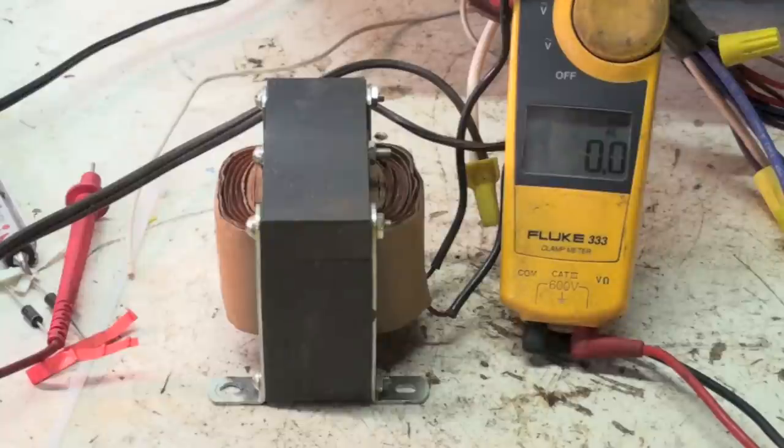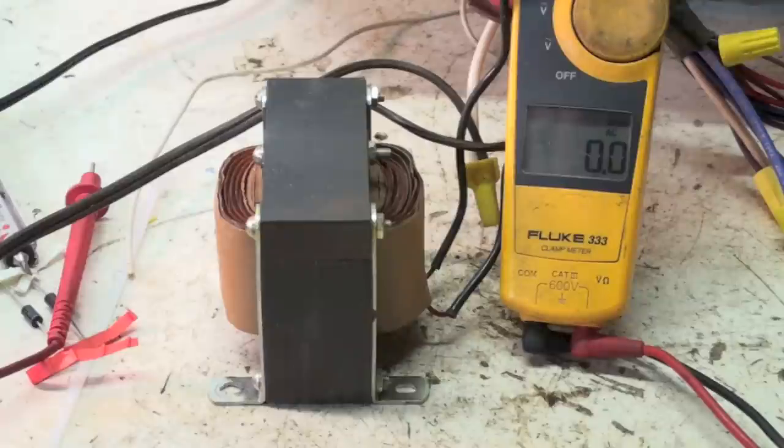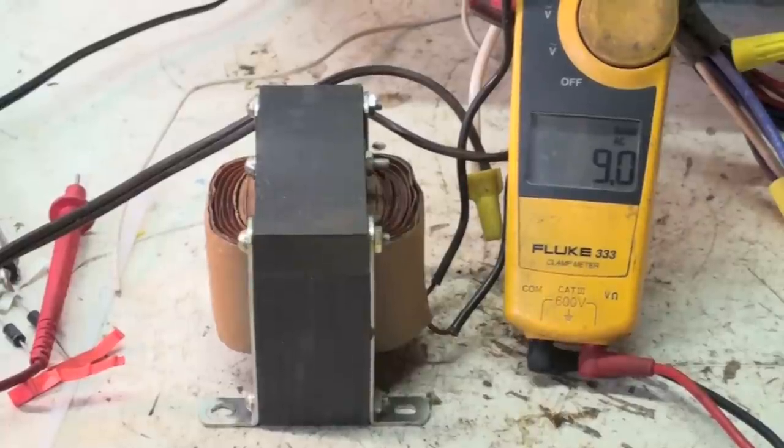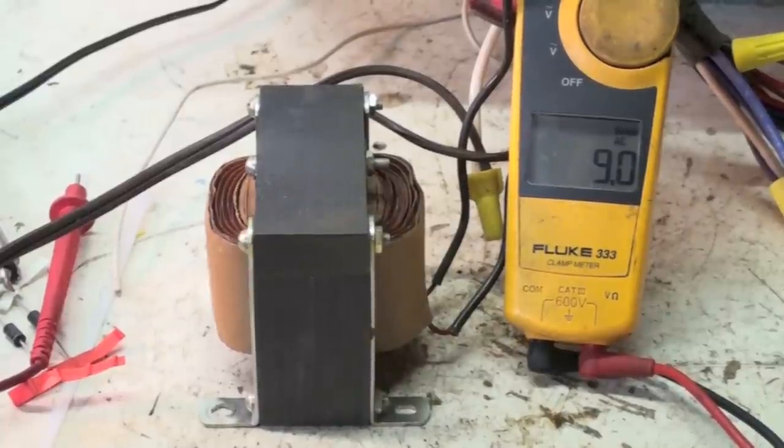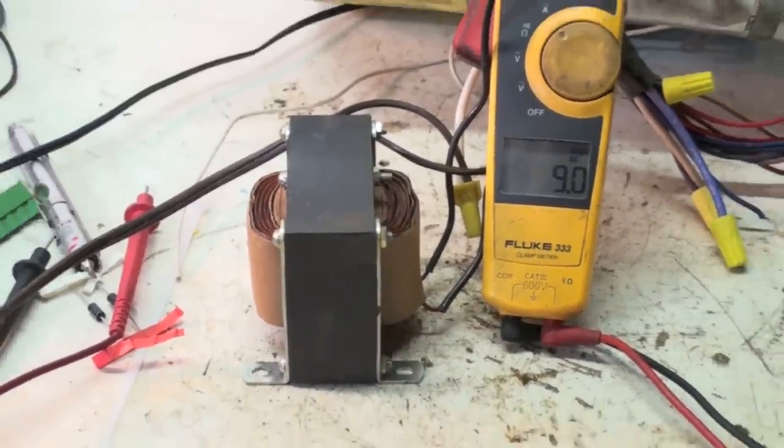And what it does is it chokes down the voltage. Now I'm going to fire this up and mostly you'll see the amp draw is running much slower. The amp draw is 9 amps, which is way less than it was before.